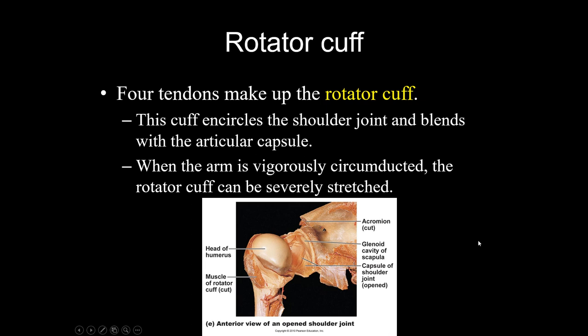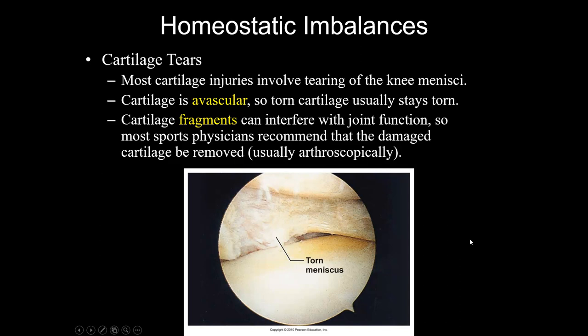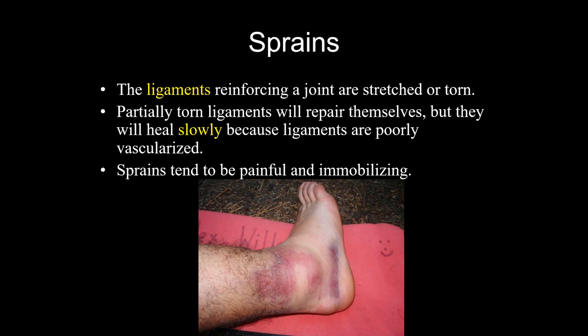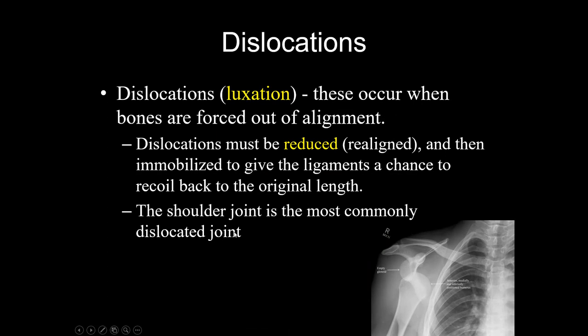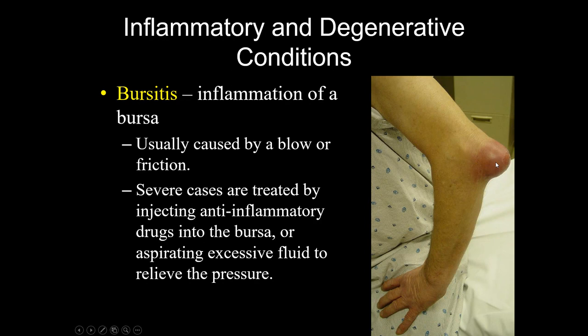Joint injuries: cartilage tears are exactly what they sound like and usually require surgery because cartilage is avascular and doesn't heal well. Sprains mean you've bent a joint and overstretched ligaments. Walking it off can help unless the bones are no longer staying in alignment. Dislocations are when bone ends are no longer in alignment — they have to be reduced, meaning you put the bone ends back together and then use a splint to keep everything in place. Bursitis is inflammation of a bursa, often caused by trauma but also by bacterial infection — that person in the video needed antibiotics. Tendonitis is the same thing but affecting a tendon sheath.